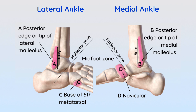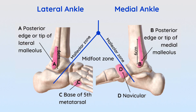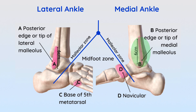To apply the Ottawa rules, consider the diagram showing the malleolus zone and the midfoot zone. The malleolus zone includes points A and B: point A covers the posterior edge or tip of the lateral malleolus and the 6 cm proximal to it, and point B covers the posterior edge or tip of the medial malleolus and the 6 cm proximal to it. The midfoot zone includes points C and D, where point C is the base of the fifth metatarsal and point D is the navicular.